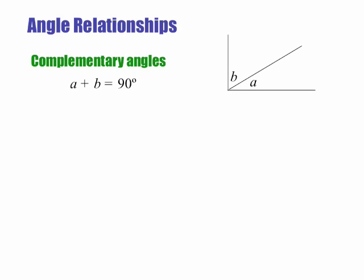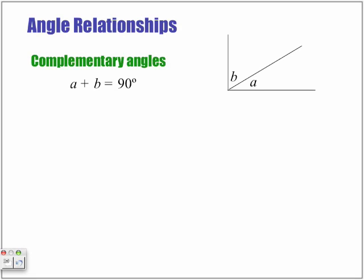Angle relationships. Complementary angles. A complementary angle is if we add two angles together to give us a 90 degree angle. So regardless of what these two are, we know that if we add them together, it will give us a total of 90 degrees.